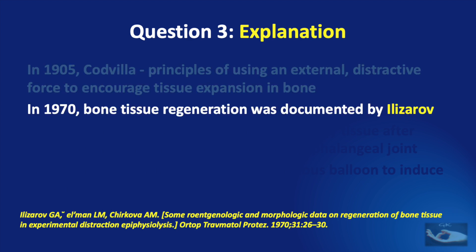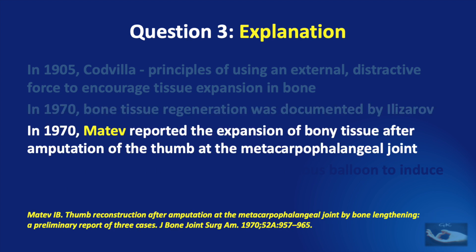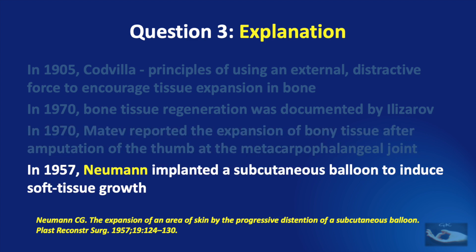In 1970, bone tissue regeneration was documented by Elisarov. In 1970 again, MATEV reported the expansion of bony tissue after amputation of the thumb at the metacarpophalangeal joint. The induction of new soft tissue growth adjacent to the bony structures undergoing gradual lengthening was noted. In 1957, Newman implanted a subcutaneous balloon to induce soft tissue growth purposefully for the reconstruction of an external ear deformity.